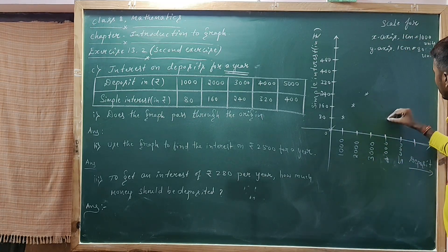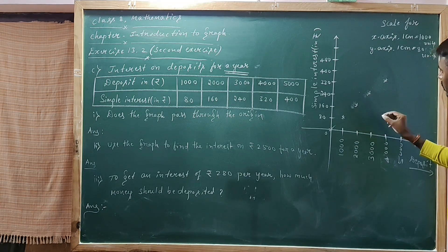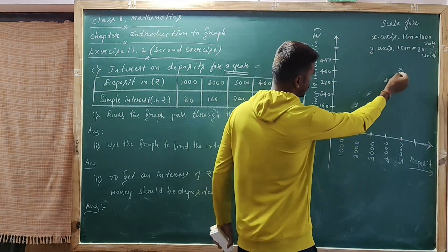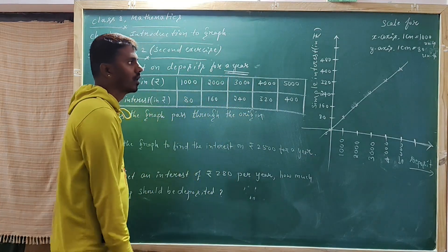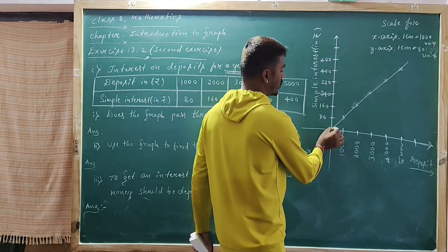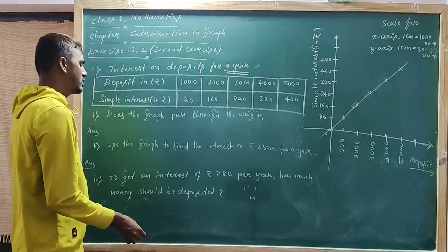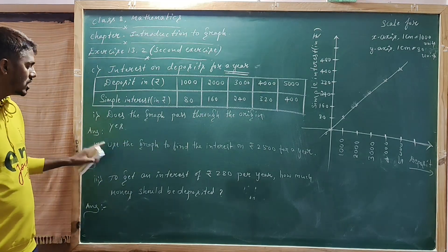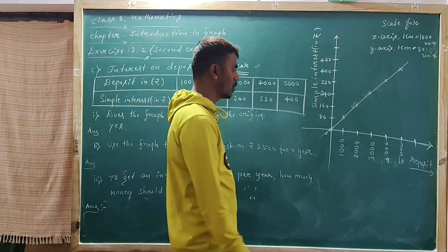For 4000 the interest is 320. Join all the coordinate points. Does the graph pass through the origin? The origin is (0, 0). Yes, the graph line passes through the origin.